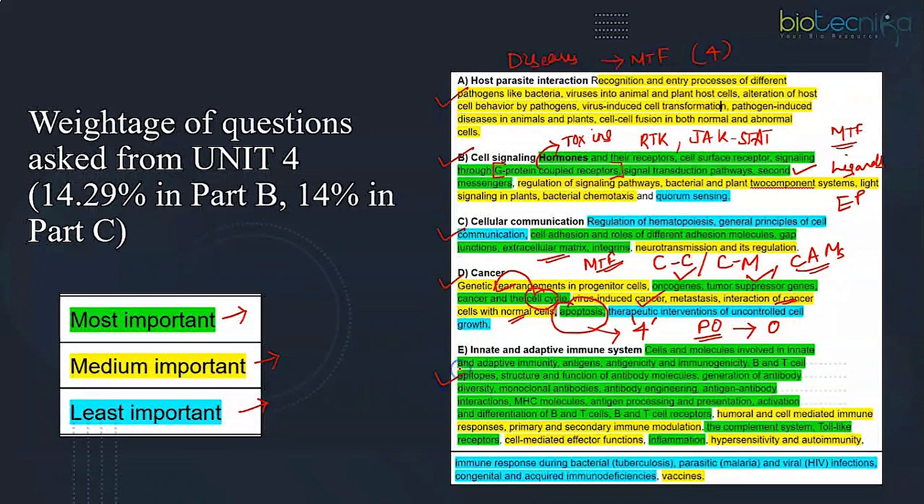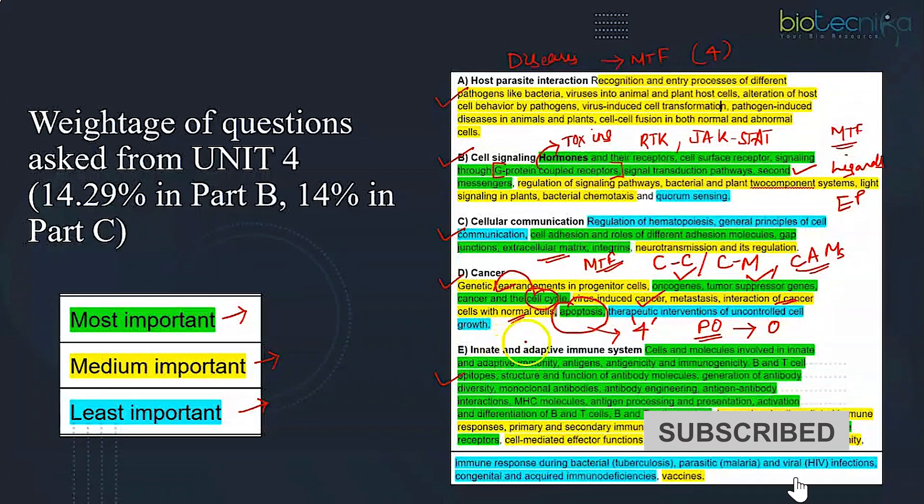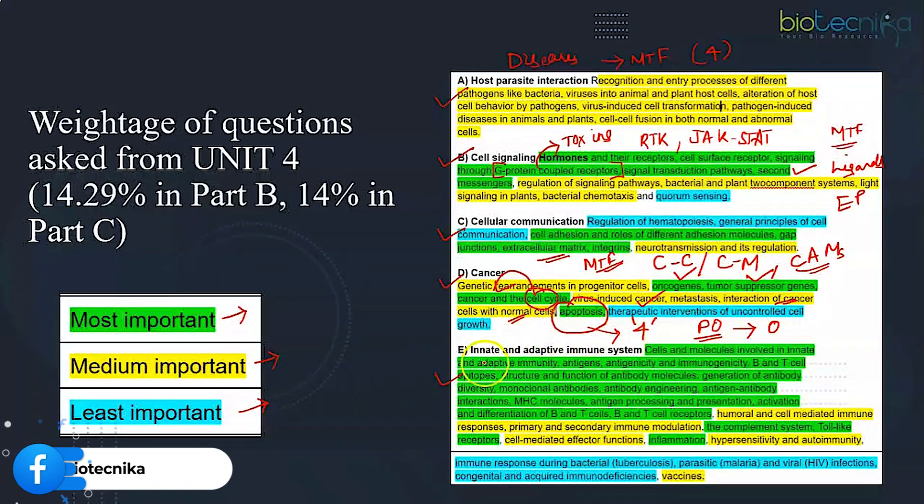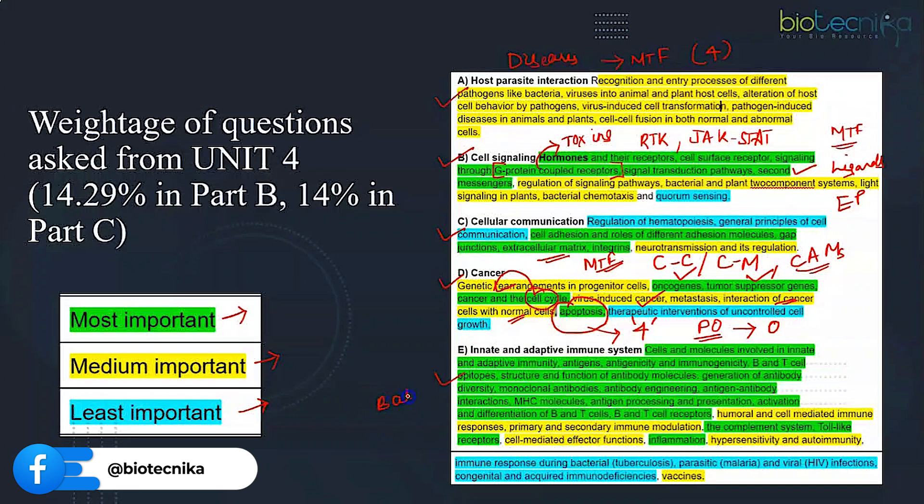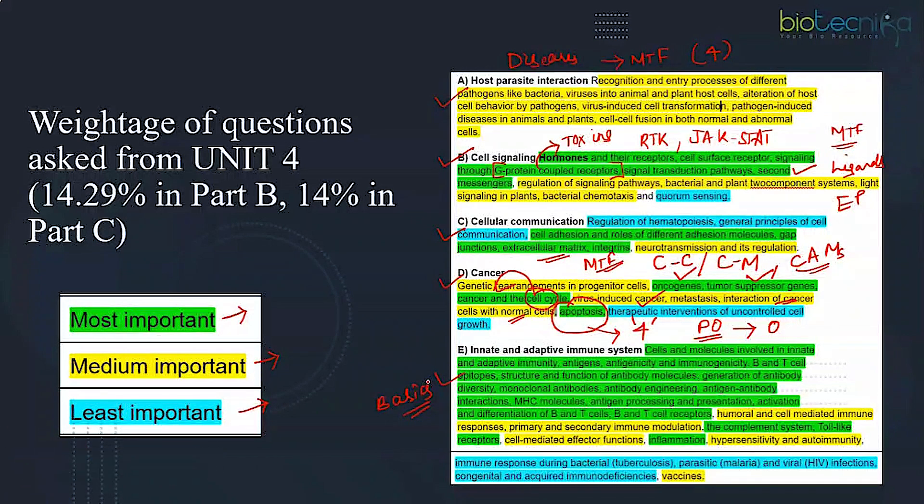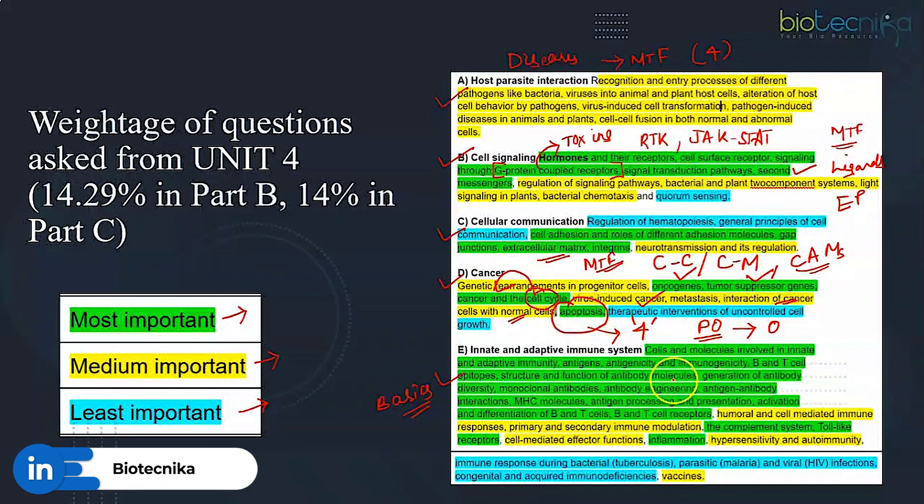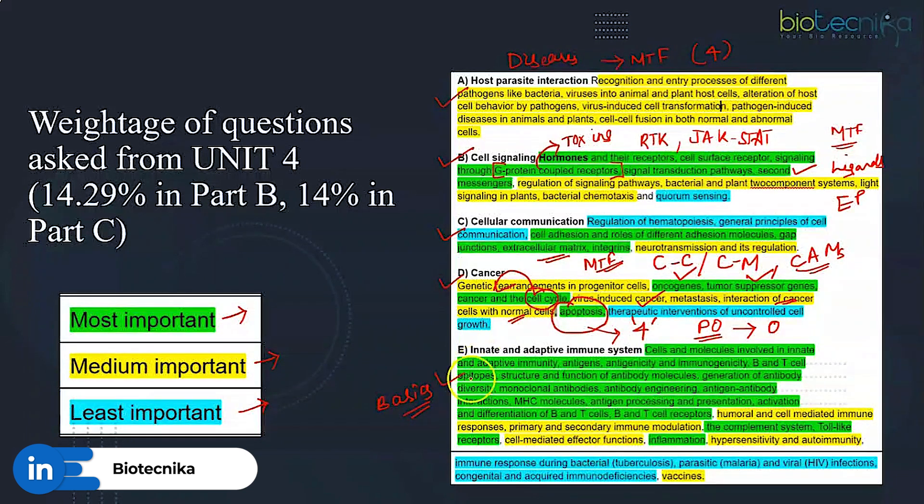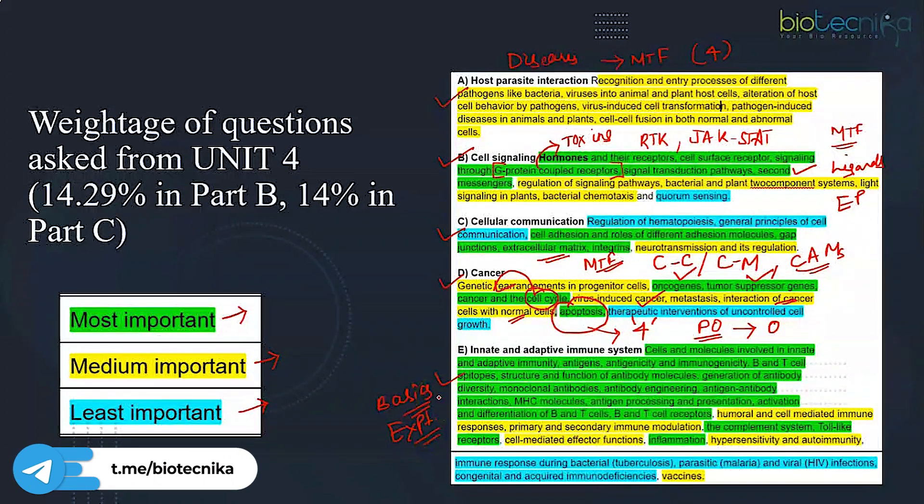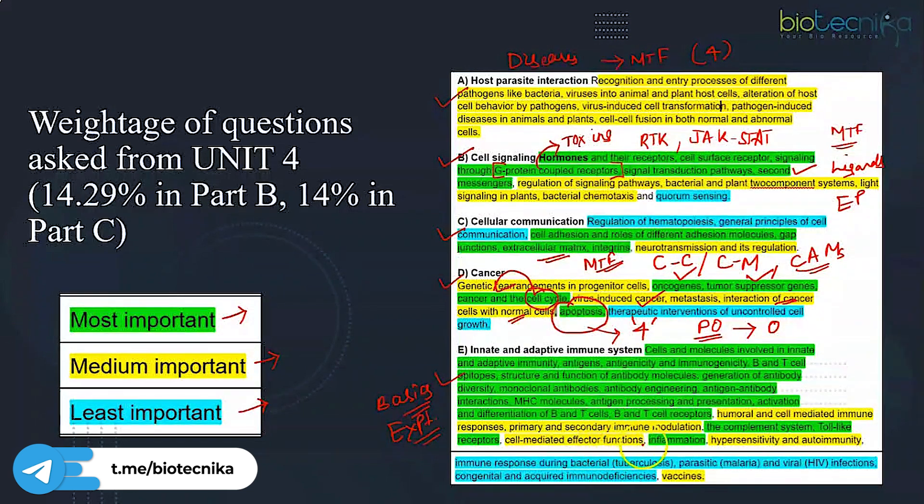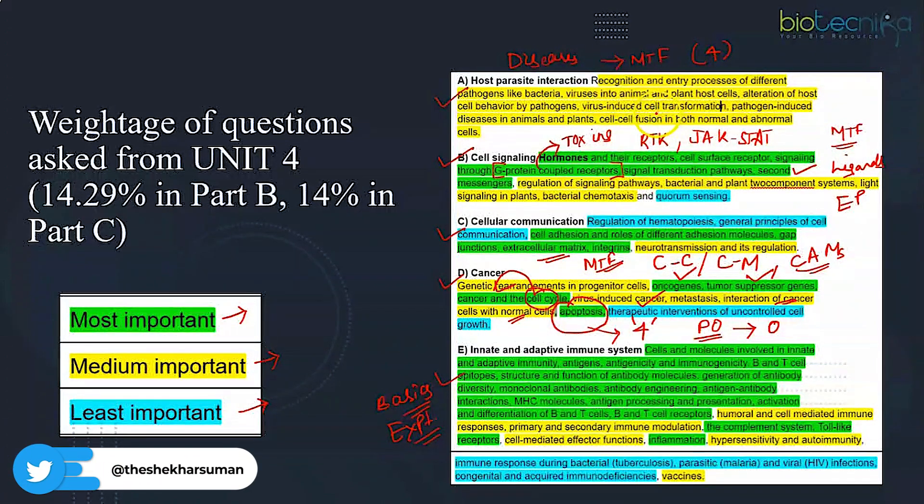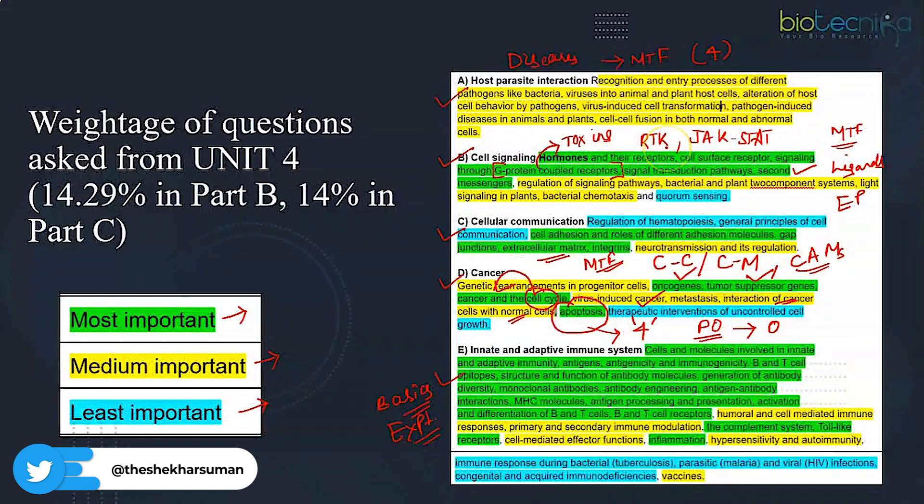Lastly we have immunology. As I told you, quite unpredictable unit from Unit 4. The thing is that you have to be very clear with the basics. Unless and until you know about the basics, it becomes difficult to solve any question. So be clear with the basics from here. Most of the times experimental questions are applied, so that will be a kind of conceptual check kind of questions. You can skip diseases related part because anyways you are covering it over here in subunit A.